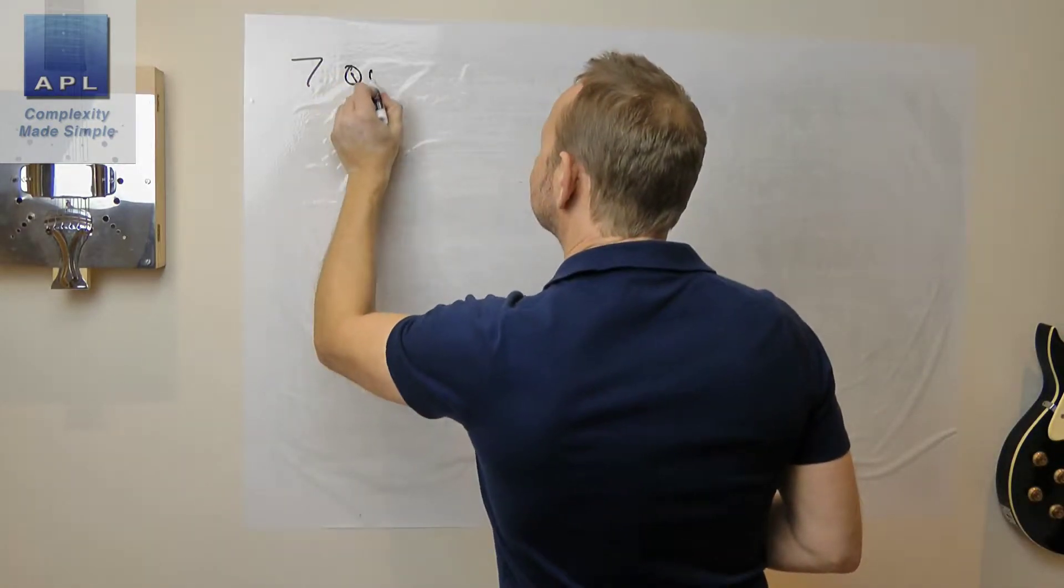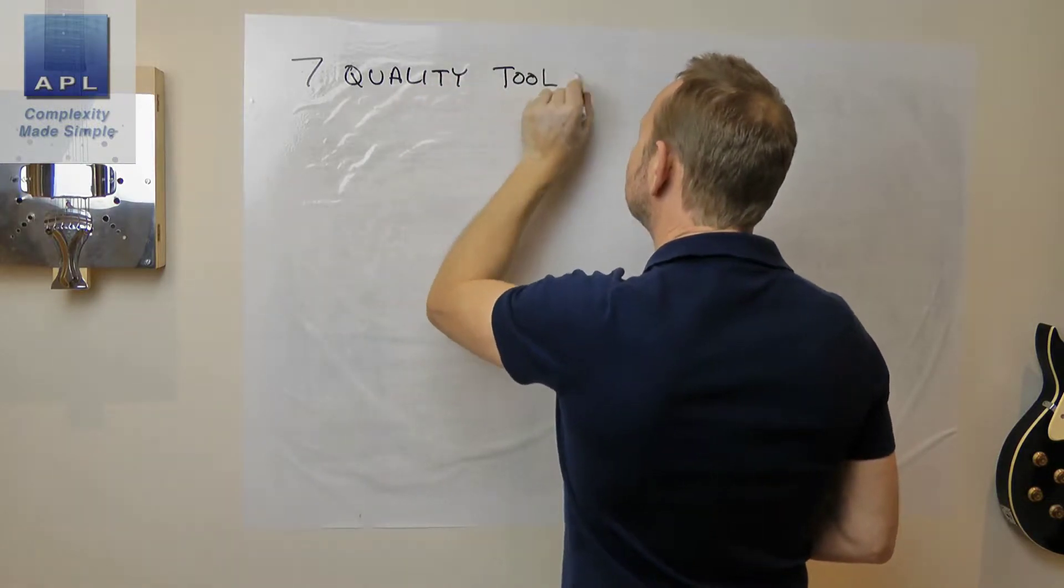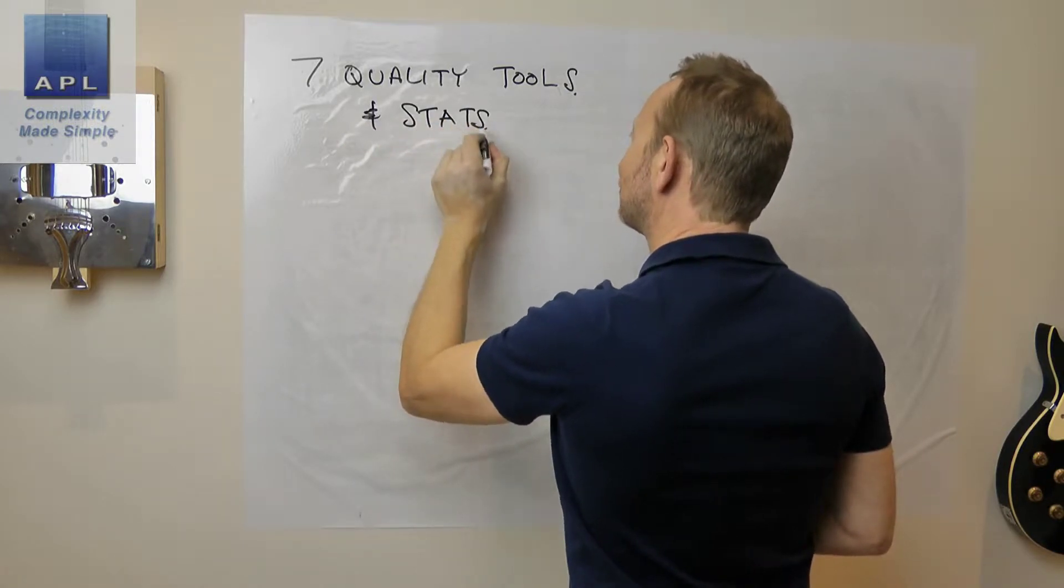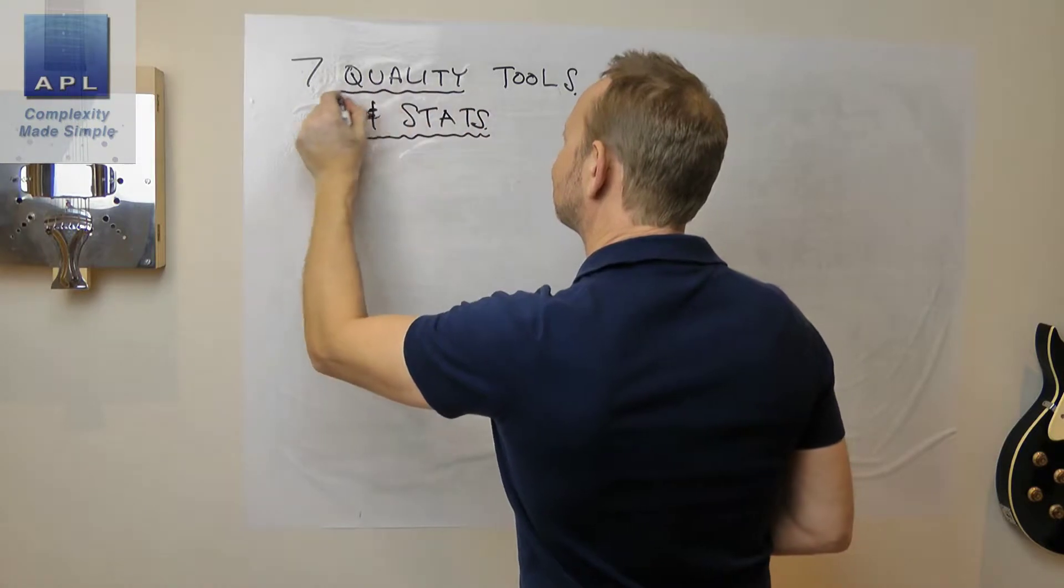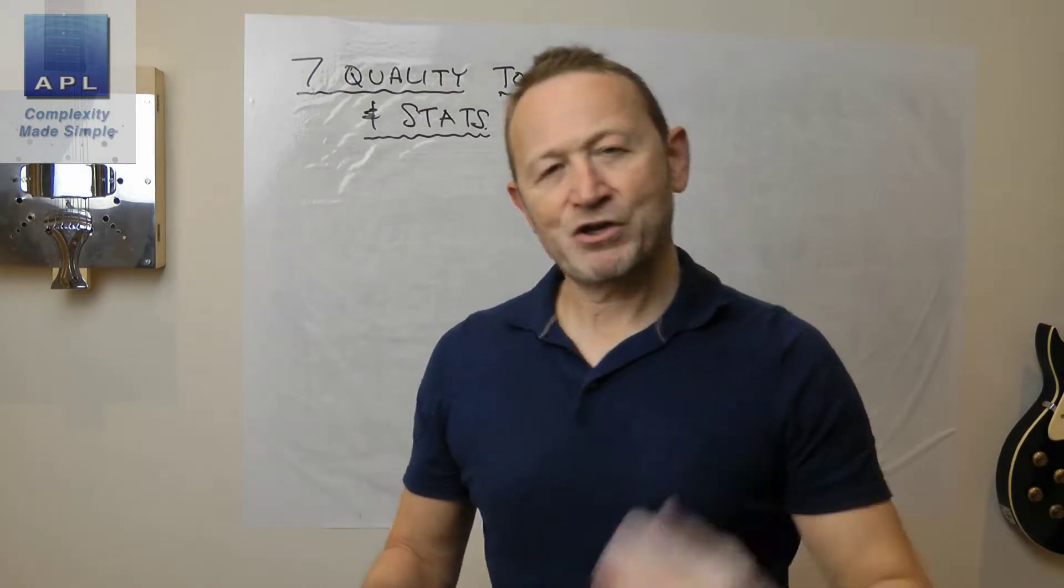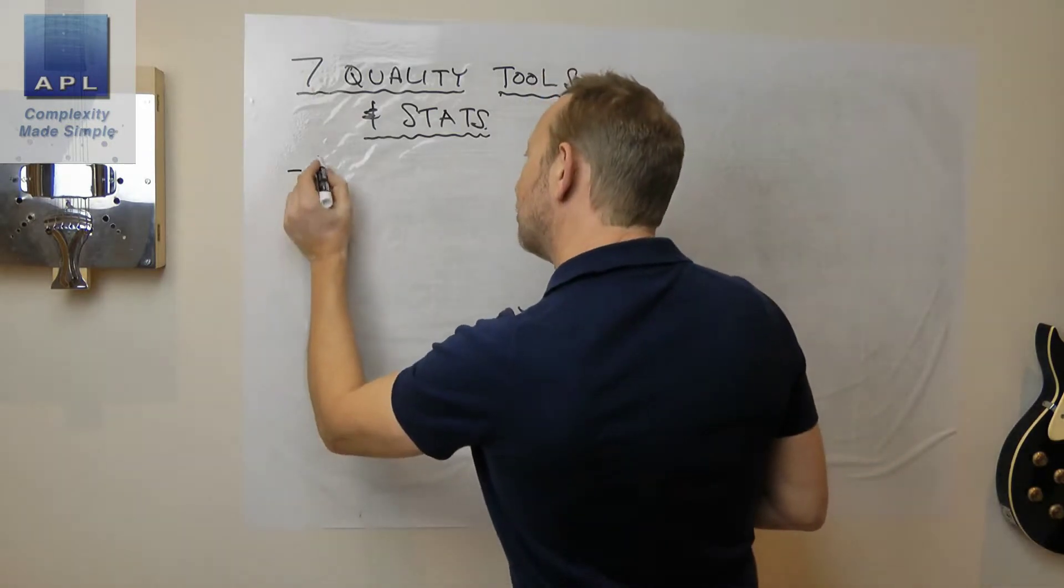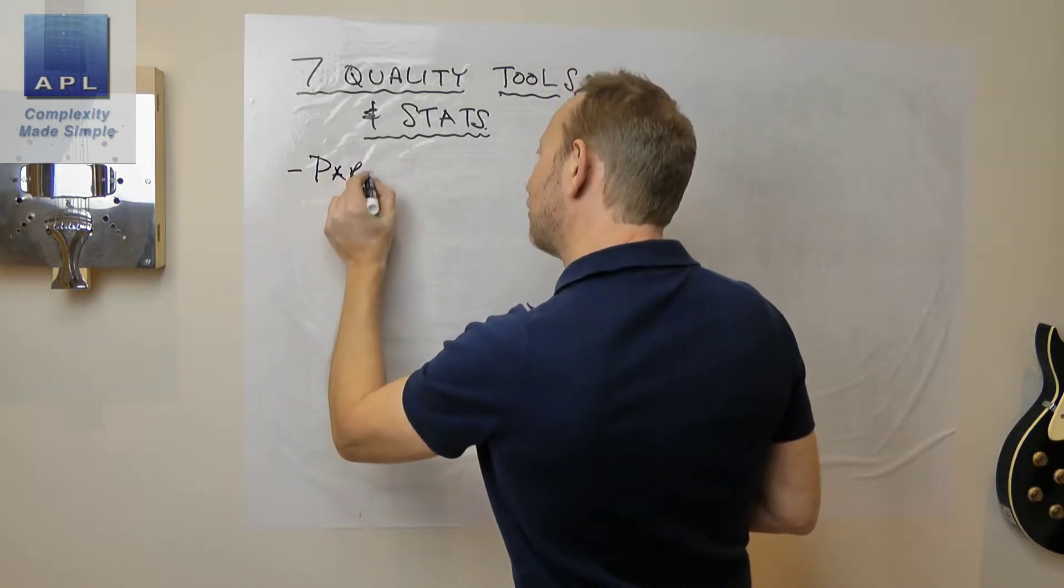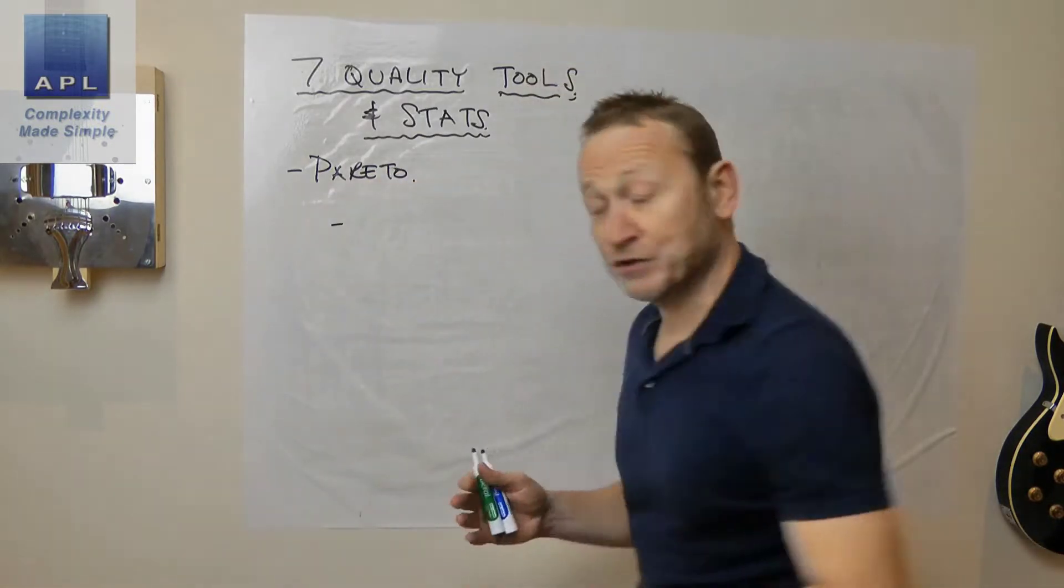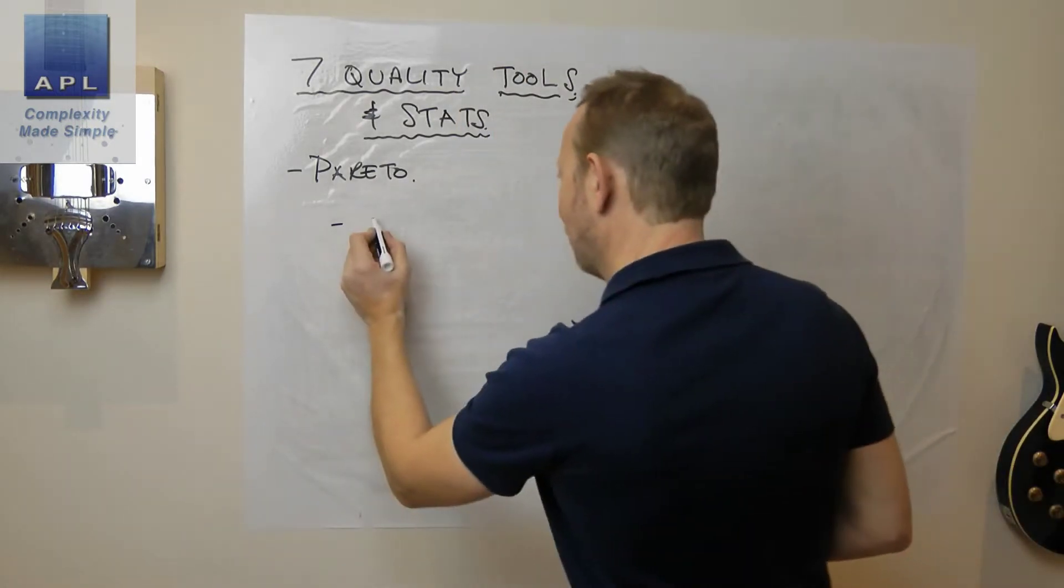So we've got the seven quality tools and the stats that's in there. In a previous video I showed you the seven quality tools in the order that I typically use them, and I think I said at the beginning I would typically start off with a Pareto. This would be the one that I would use in order to find the problem in the first place. Then once I've got the problem